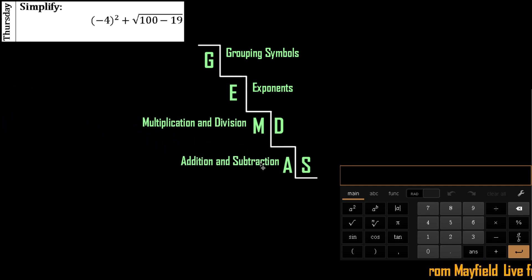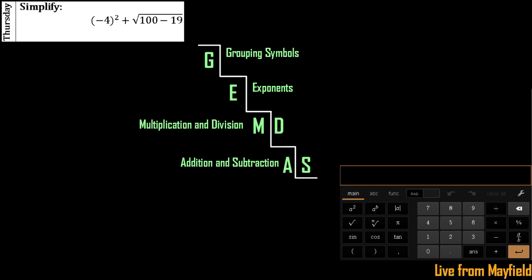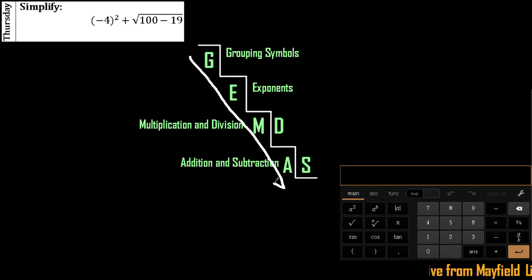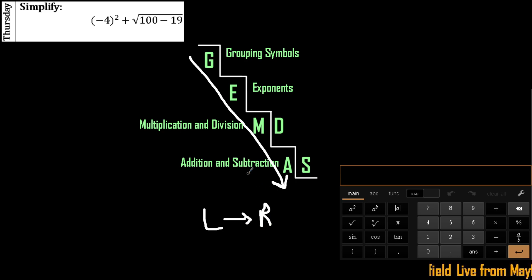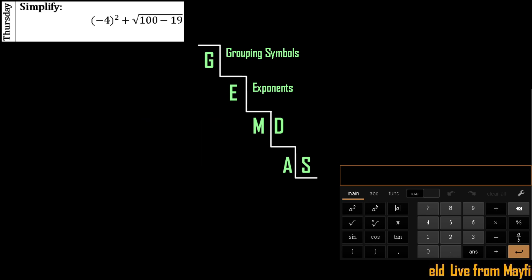And we have addition and subtraction. This should be very straightforward. As we're going down the staircase, you want to make sure you are working left to right. So if you have division first on the far left, you would do the division first. Let's use these ideas for ourselves.